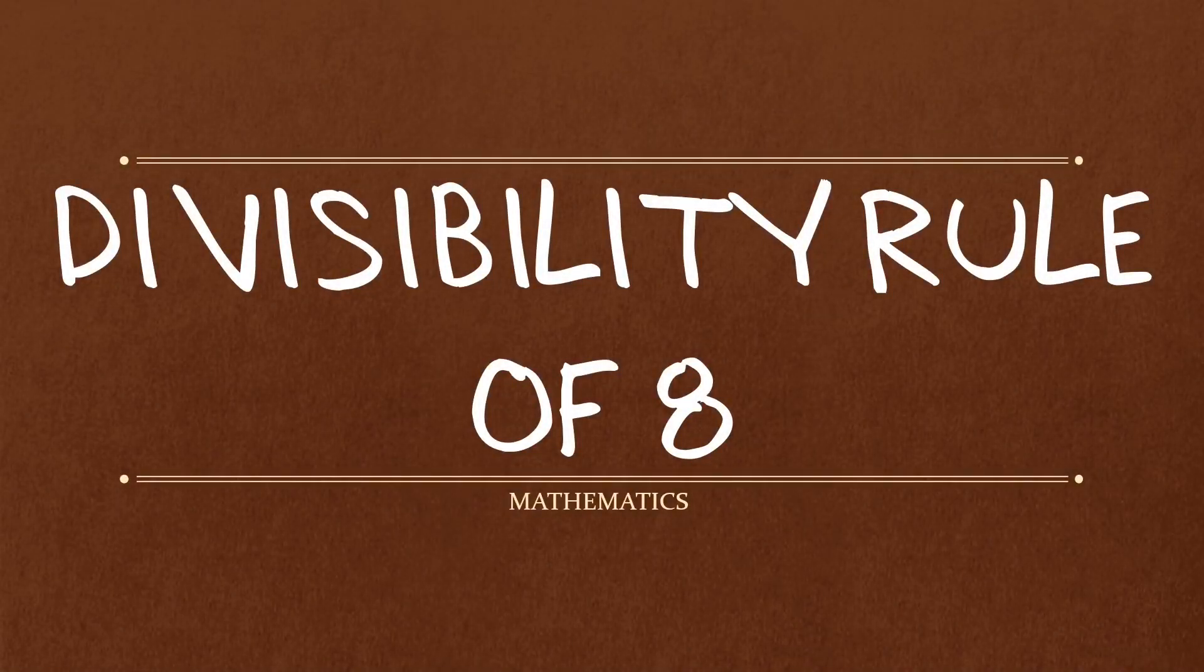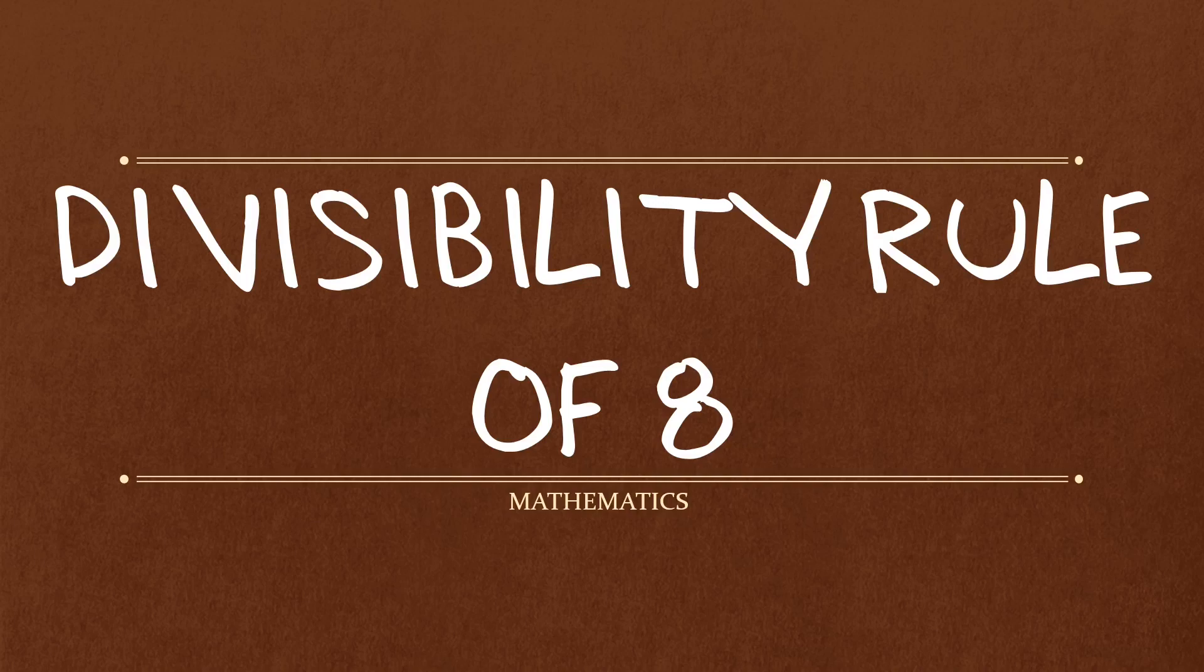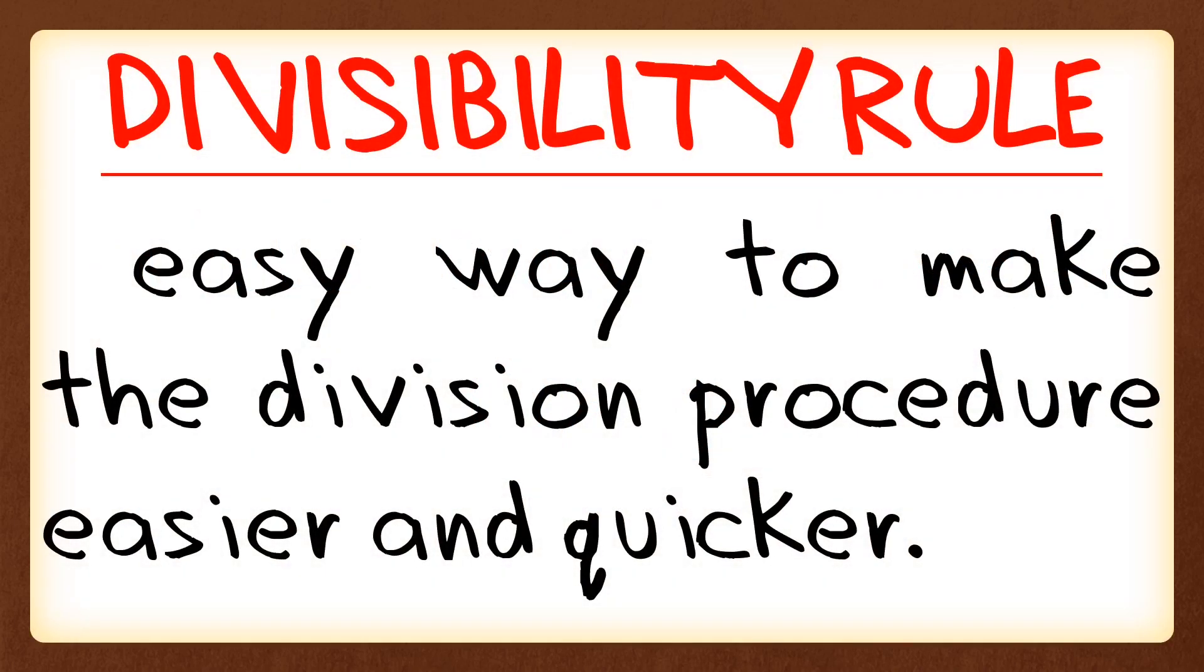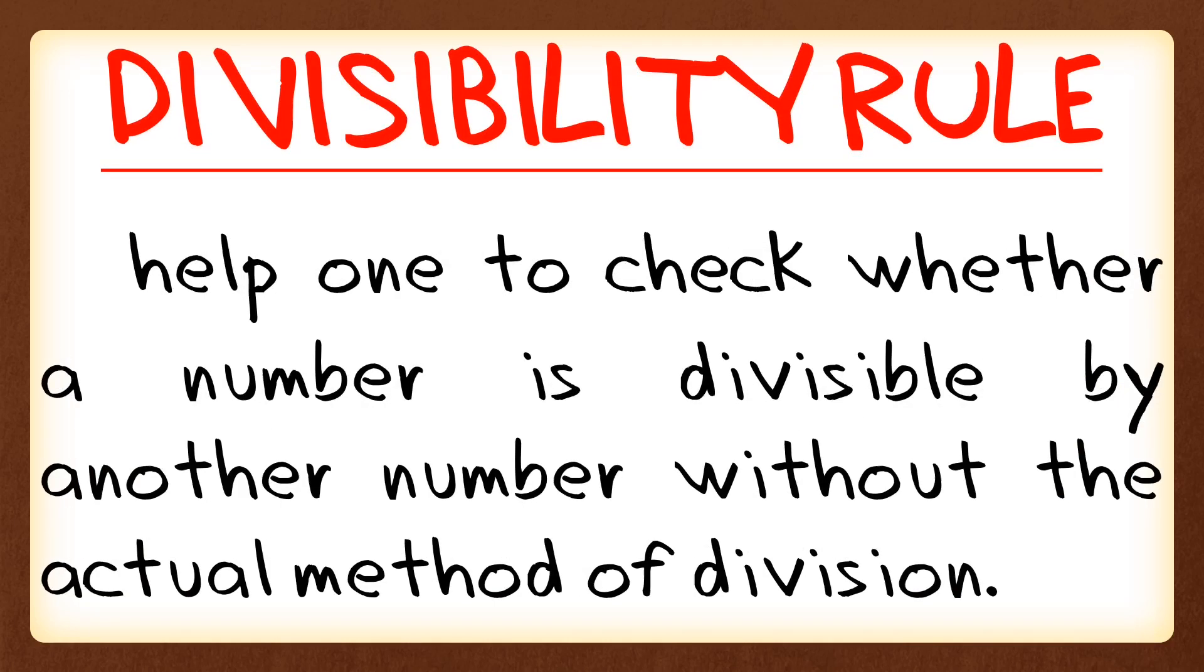In this video, we're going to learn about the divisibility rule of 8. Divisibility rule is an easy way to make the division procedure quicker and easier. It helps one to check whether a number is divisible by another number without the actual method of division.